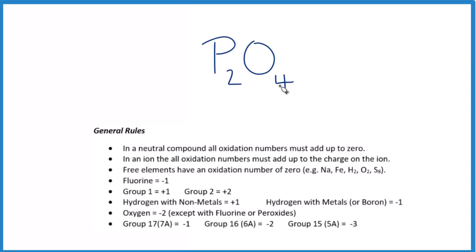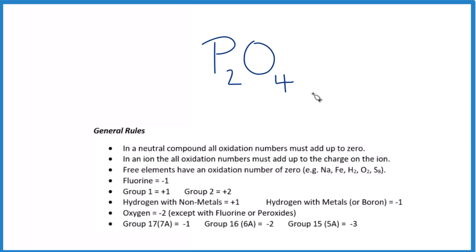Let's find the oxidation number for each element in P2O4. The thing to realize is this is a neutral compound — we don't have a negative or a positive after it, so it's a neutral compound. All those oxidation numbers need to add up to zero.